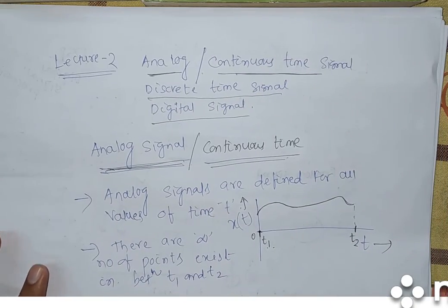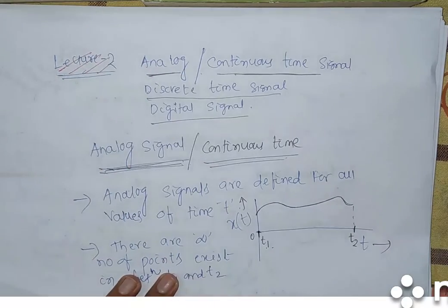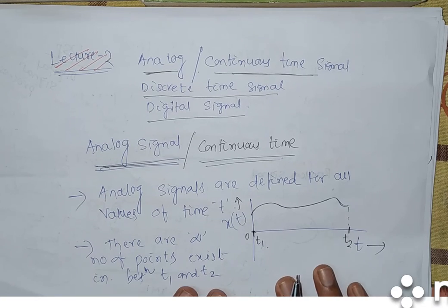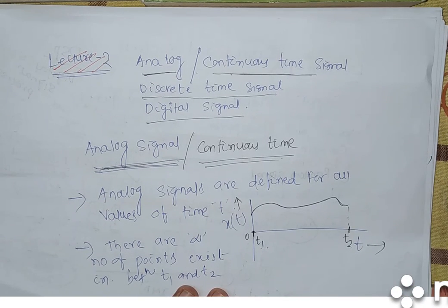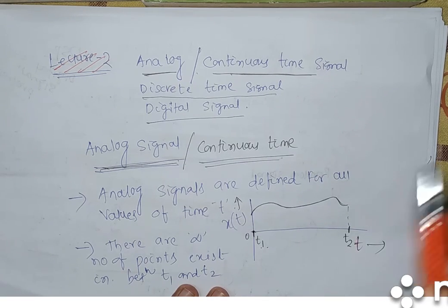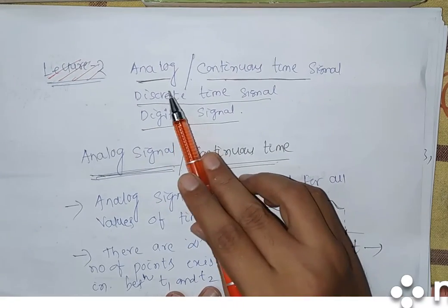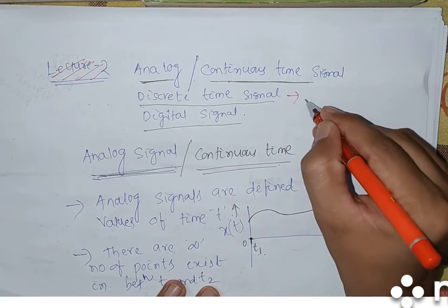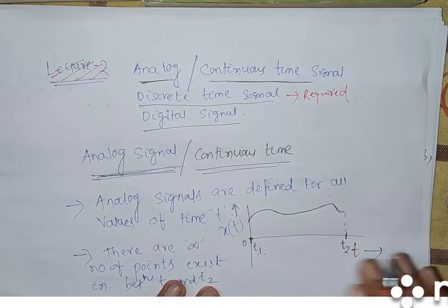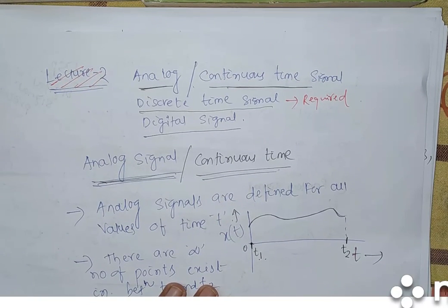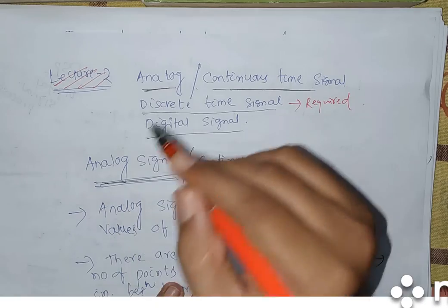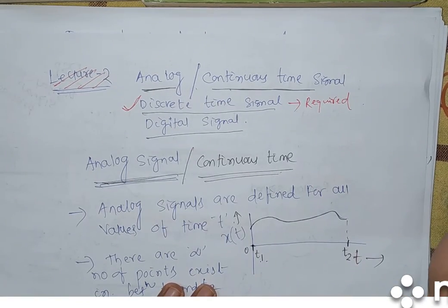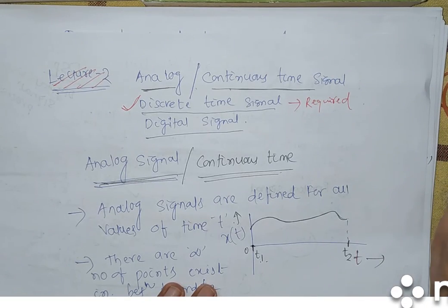Now, based on time, we are categorizing signals like this: it is an analog signal or continuous time signal, discrete time signal — this is our required part — and digital signal. I want to remind you people: we will deal more with discrete time signal, because this is Discrete Time Signal Processing.